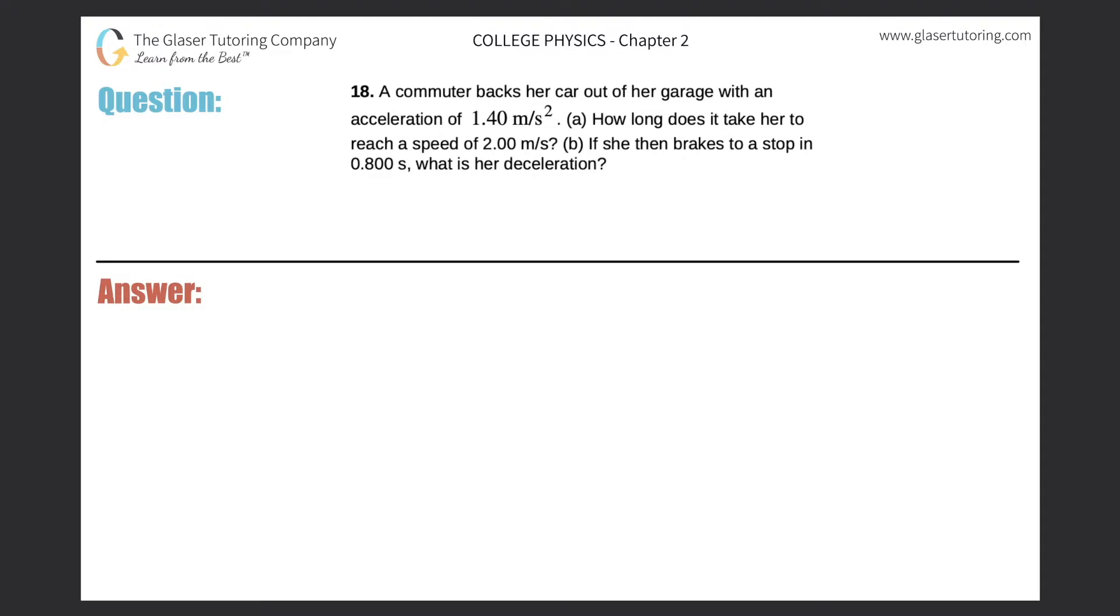Number 18. A commuter backs her car out of her garage with an acceleration of 1.40 meters per second squared. Letter A. How long does it take her to reach a speed of 2.00 meters per second? All right, so let's work with part A first.